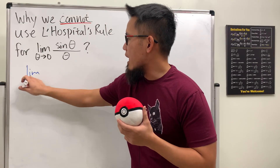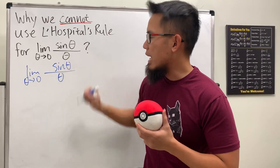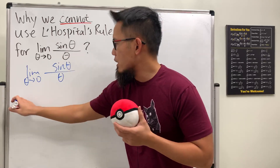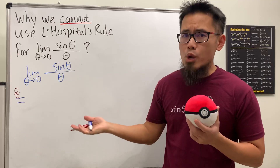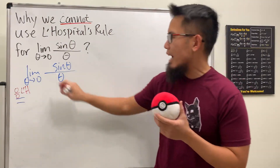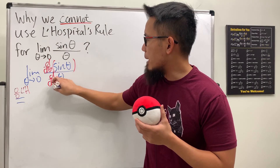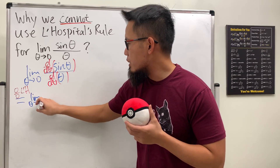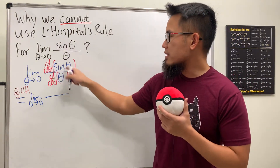If we look at the limit as theta going to zero, we have sine theta over theta. When we put zero in, we get zero over zero, so it seems like that fits the criteria for using L'Hôpital's rule. So if you want to continue, you will have to differentiate the top and then differentiate the bottom.